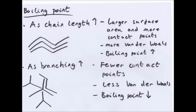Boiling points. As chain length increases, you get a larger surface area with more contact points. So if you have 2 chains of butane, there are 4 contact points, one for each carbon. And if you have pentane, there are 5 contact points. This means there are more van der Waals forces, more energy required to break all of them, so boiling point increases.